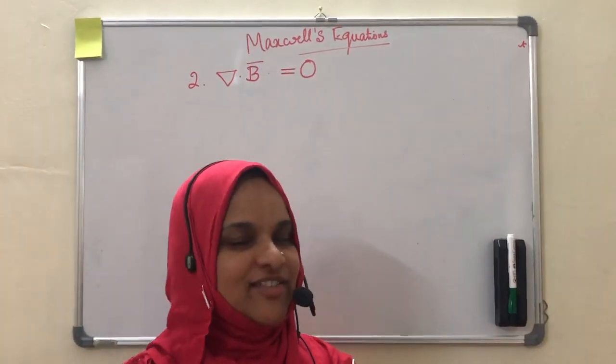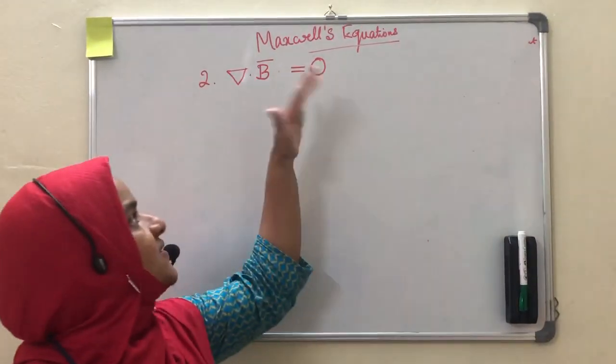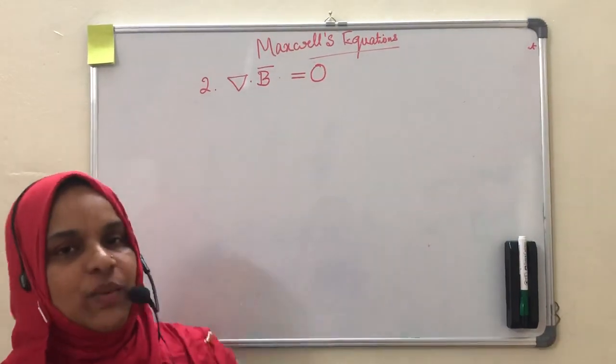Welcome to my class on electromagnetic theory. The second Maxwell's equation is del dot B is equal to 0.